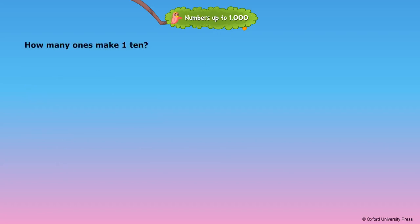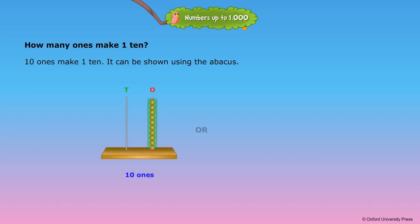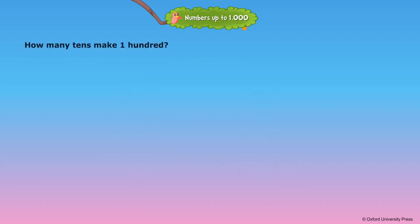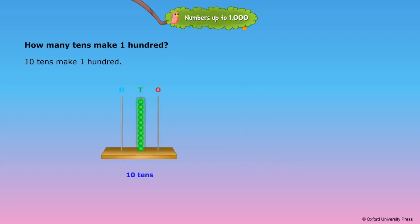How many ones make one ten? Ten ones make one ten. It can be shown using the abacus: ten ones or one ten. How many tens make one hundred? Ten tens make one hundred — ten tens or one hundred.